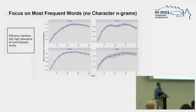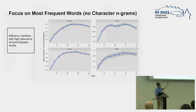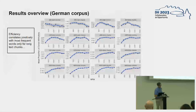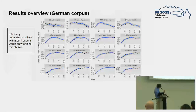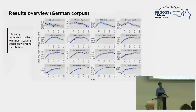I conclude with a note that might be interesting in itself — just a curiosity. Focusing on the most frequent words and not character n-grams, you will notice clearly with English, French, and German — and maybe a bit less with Italian — that efficiency decreases when you use a high selection of most frequent words for stylometric attribution. This has many possible explanations and depends first of all on the length of the text being analyzed. The correlation is practically negative when working with very short texts of 200 tokens, but then becomes quite positive with long texts of 5000 tokens.